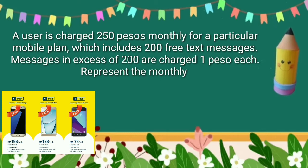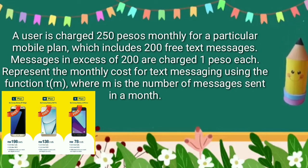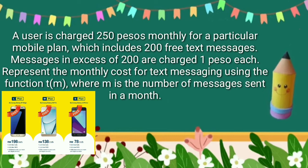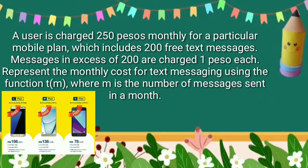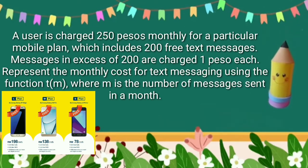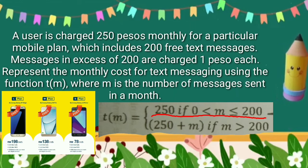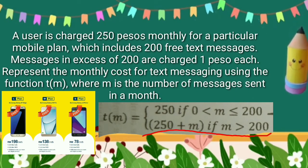Example A. A user is charged P250 monthly for a particular mobile plan, which includes 200 free text messages. Messages in excess of 200 are charged P1 each. Represent the monthly cost for text messaging using the function T of M, where M is the number of messages sent in a month. This is the formula for sending messages not exceeding 200, and this one is the formula in case the messages sent were more than 200.